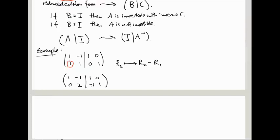And now, okay, let's divide this last row by 2. It's going to become 1, minus 1, 1, 0, 0, 1, minus a half, a half.